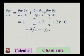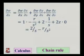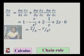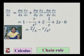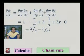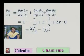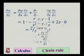For del w by del s: del w by del x is 1, and del x by del s equals minus 1 upon s square, giving minus r upon s square. Plus del w by del y is 2, and del y by del s is 1 by s. Plus del w by del z is 2z and del z by del s is 0. So the answer is 2 by s minus r by s square.